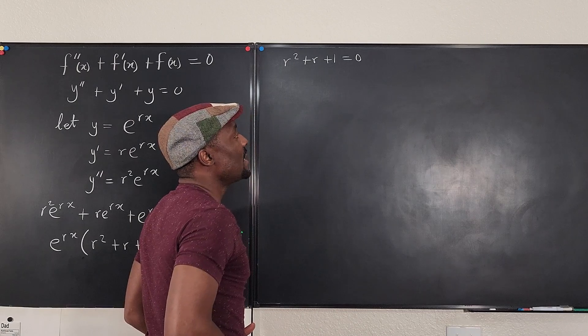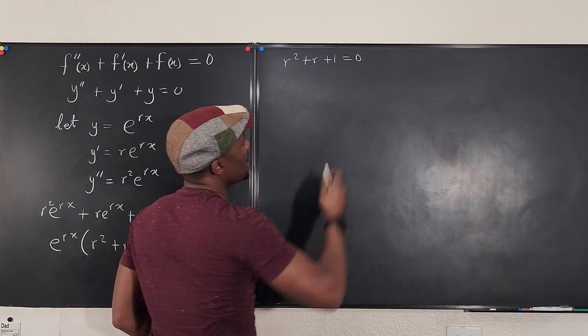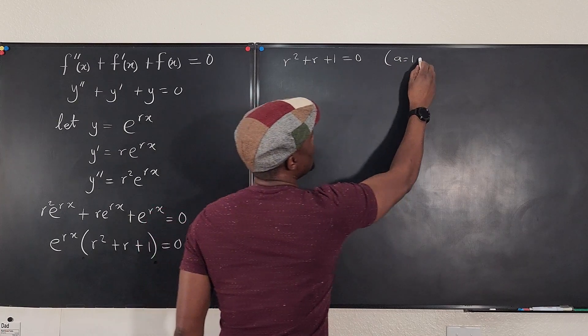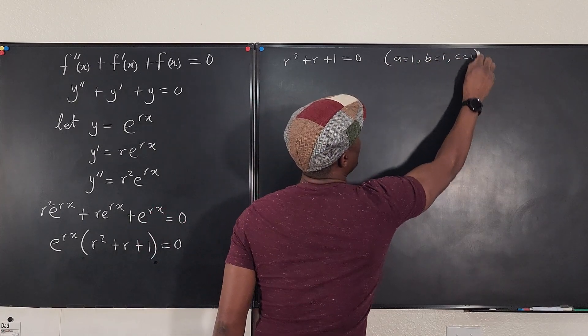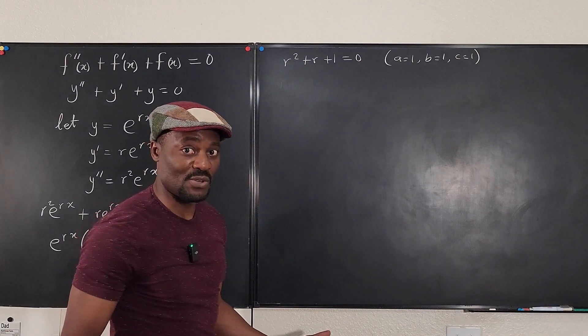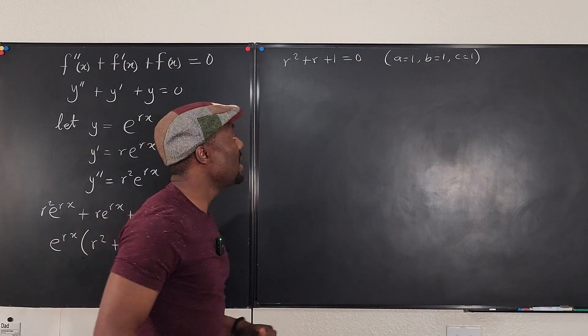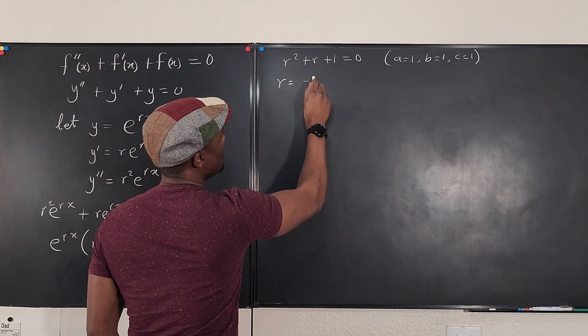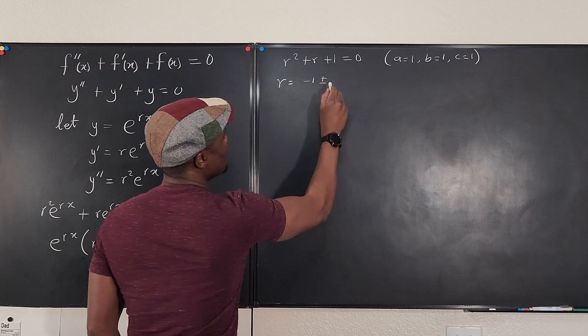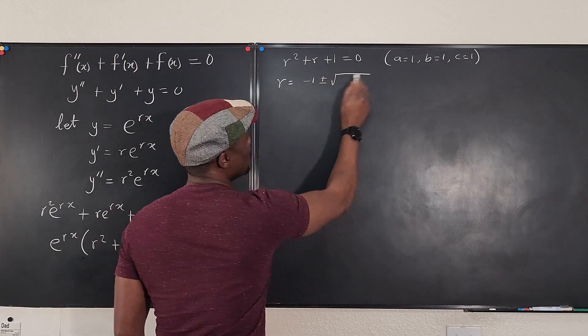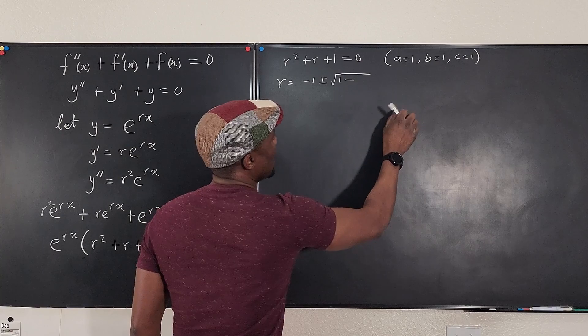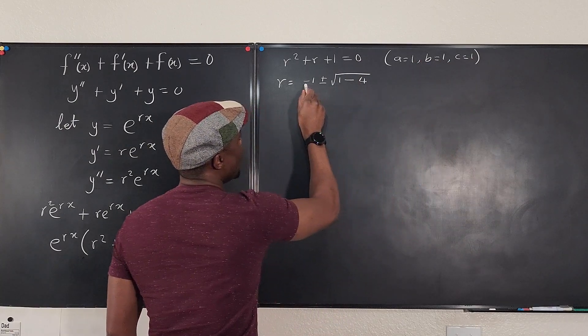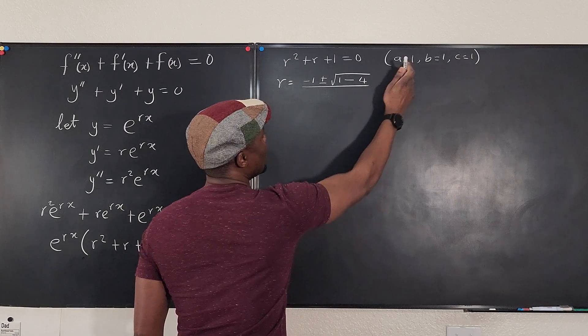So for this quadratic equation, we could as well just write a equals one, b equals one, c equals one, because we know we cannot factor it. We have to use the quadratic formula. And then we have r will be minus b, which is minus one, plus or minus the square root of b squared, which is one squared, minus four times a times c. Four times a times c is just going to be four divided by two times a, which is two.